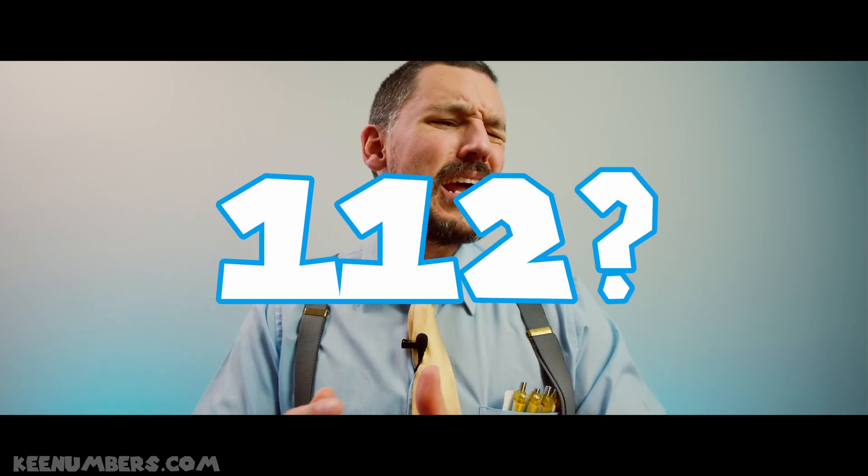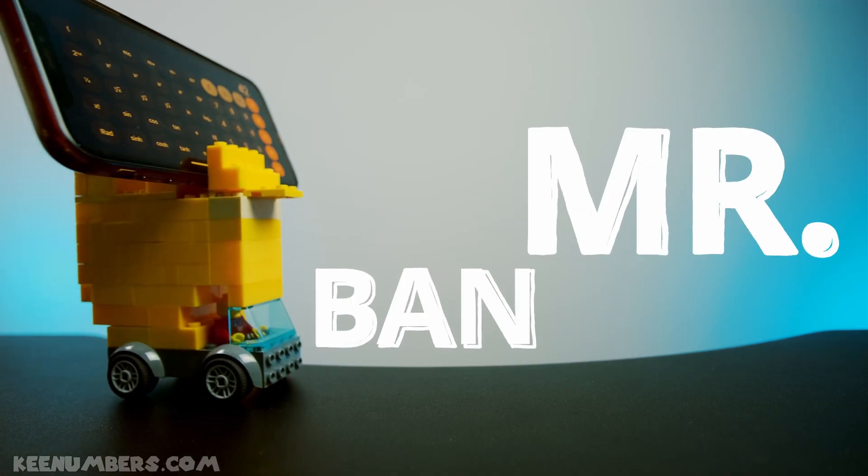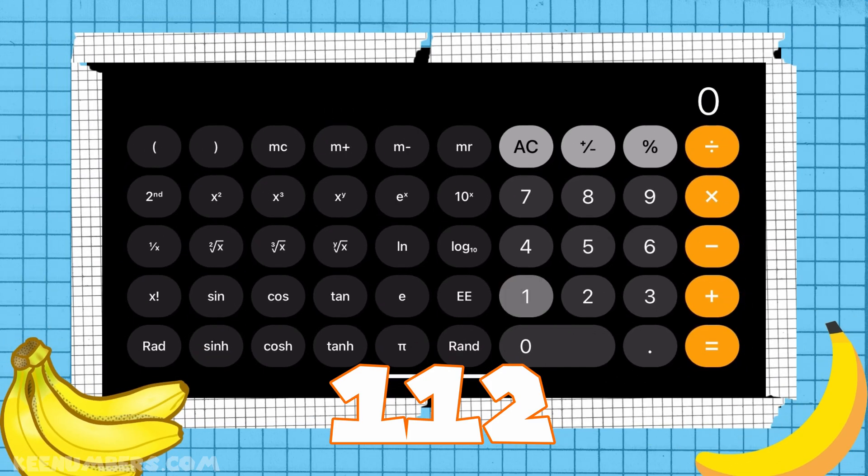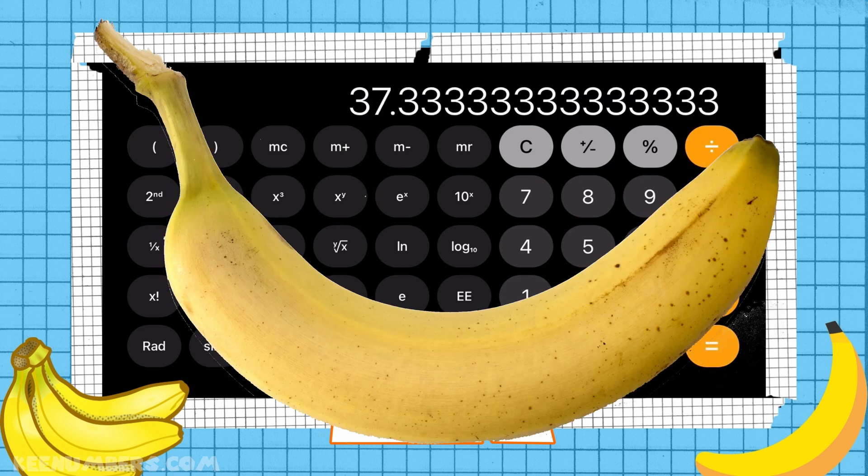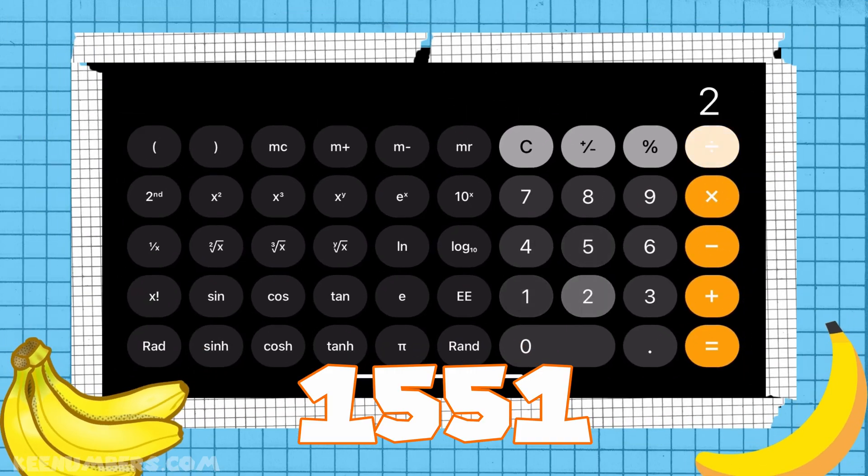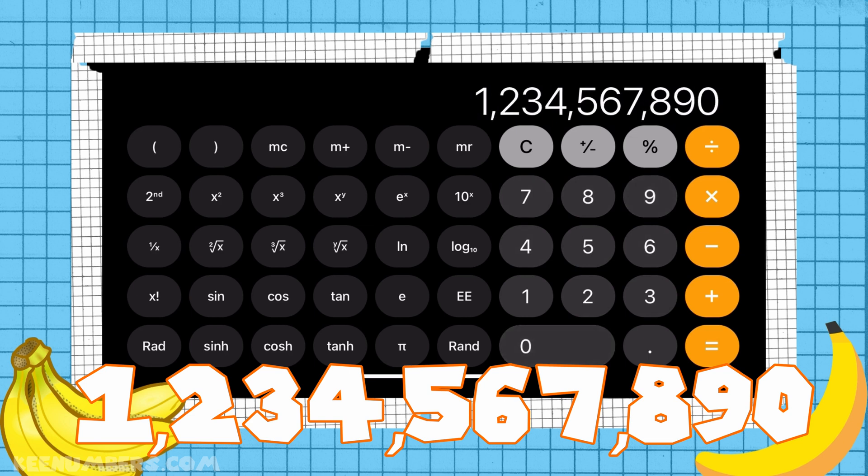But what about 112? Oh, snap! Here comes Mr. Bananas! All right, Mr. Bananas. What about 1,550? Wow, Mr. Bananas, you're really good. What about 1,234,567,890? Wow, he sure is fast with that calculator. Adios, Mr. Bananas!